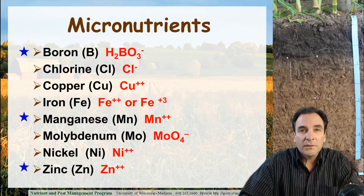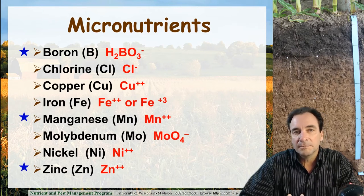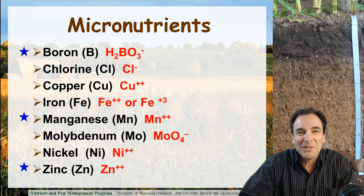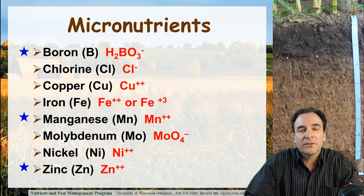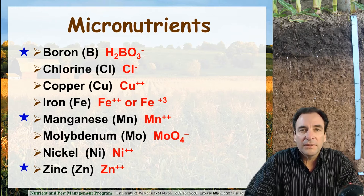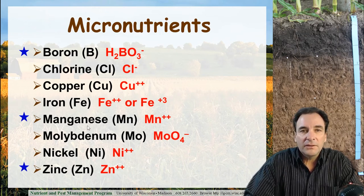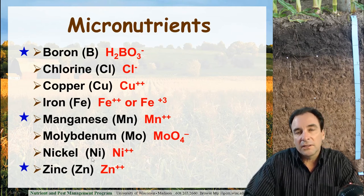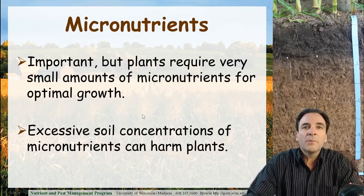Micronutrients found in soils that are important to crop production are listed here on this slide: boron, chlorine, copper, iron, manganese, molybdenum — which is always difficult for me to pronounce — nickel, and zinc. For the most part, in Wisconsin crop production, we're concerned about three micronutrients: boron in alfalfa production, manganese in soybean and small grain production, and zinc in corn production. We'll look at some of the deficiency symptoms in a moment.